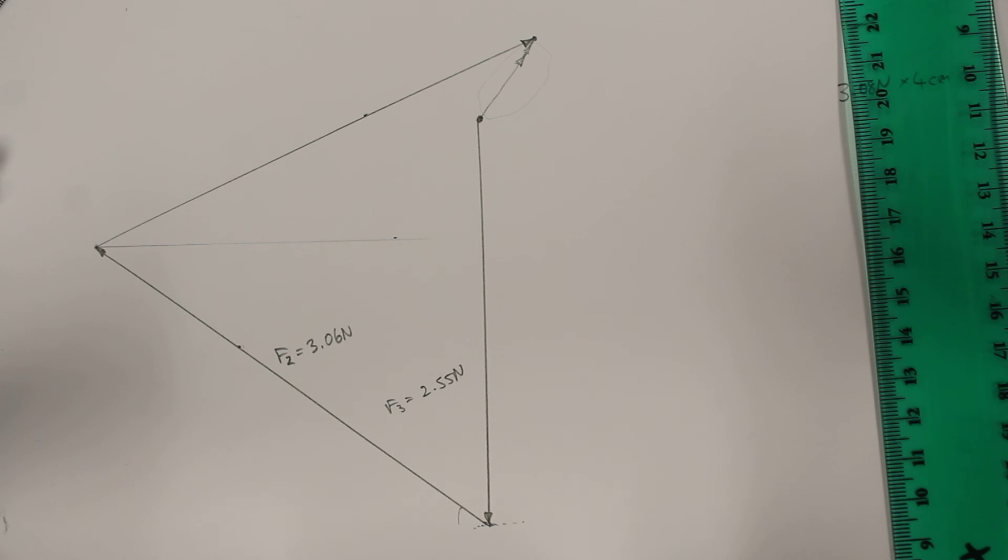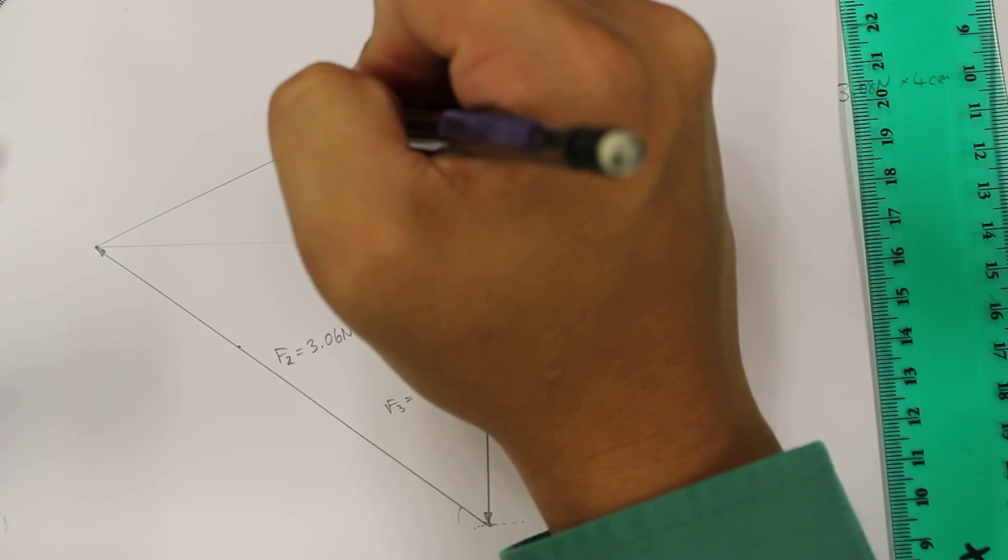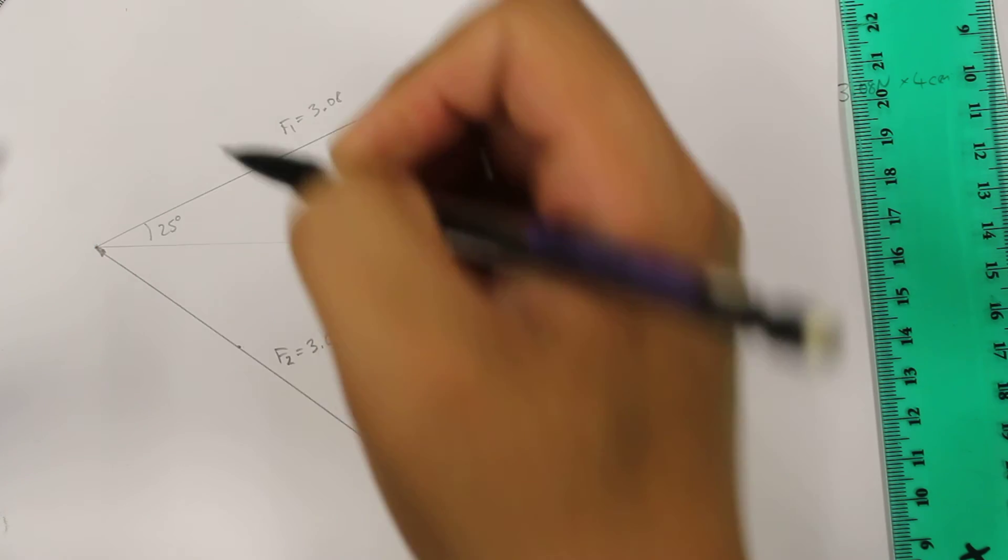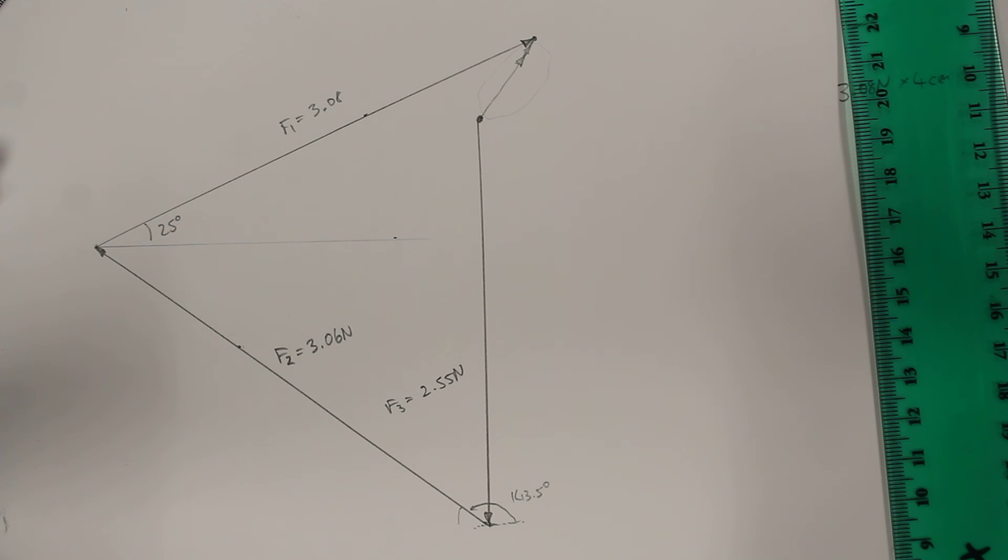Alright. Thank you for watching. I hope this has been useful for you. I should also add here, so if F1 is equal to 3.08, here's your angle of 25 degrees, and then over here our angle of 143.5 degrees. Yeah, so thank you for watching. Hope this has been helpful for you, and I'll see you next time. Bye-bye.